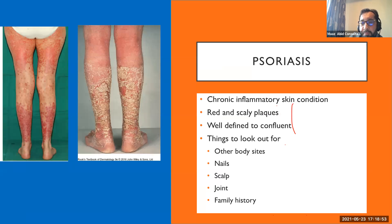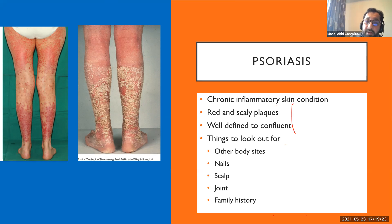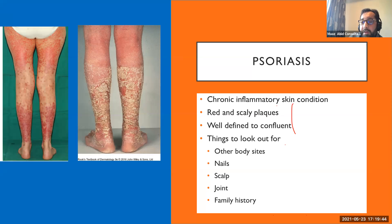Psoriasis is a very common chronic inflammatory skin condition characterised by red, scaly plaques — well-defined but becoming confluent when severe. When you see scaly plaques on the legs, examine the full skin. Clues include nail changes such as pitting, hyperkeratosis, or dystrophic and discoloured nails; scalp scaliness resembling dandruff; and joint pain, as many patients have psoriatic arthritis. Psoriasis is also more common with a positive family history.